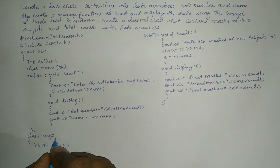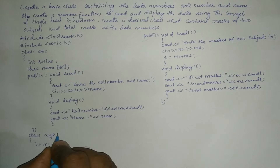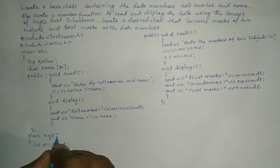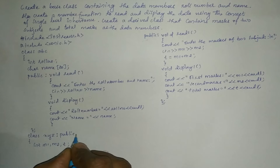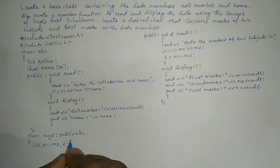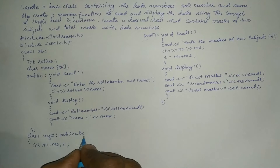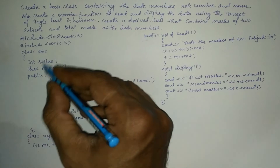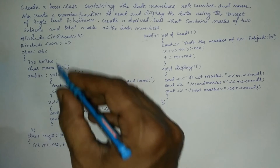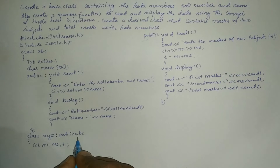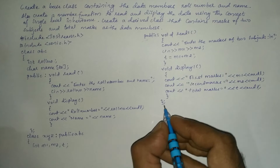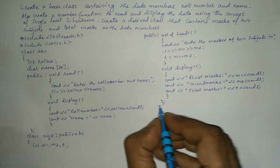Here an important point to be noted: we have written class XYZ followed by colon public ABC. The meaning of this is that if we write public ABC, all the properties which are present in the base class will get inherited to the derived class called XYZ. This is an important point to be noted.